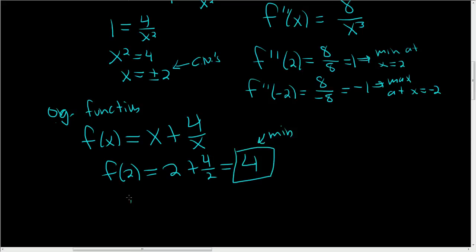And then to find the maximum, we plug in negative 2. So we have negative 2 plus 4 over negative 2. So we get negative 2 minus 2, so negative 4. So this is the maximum. And that's it.